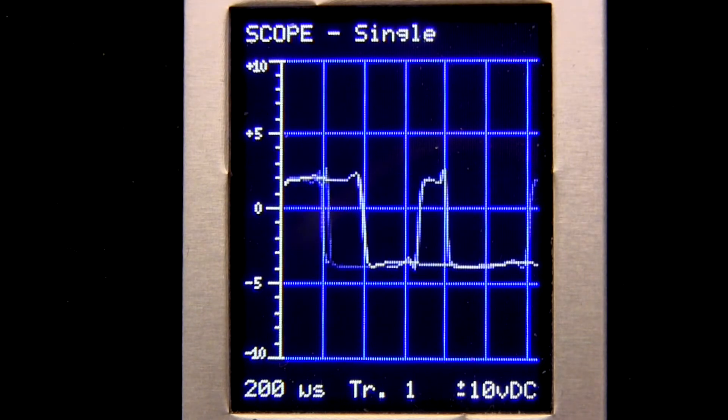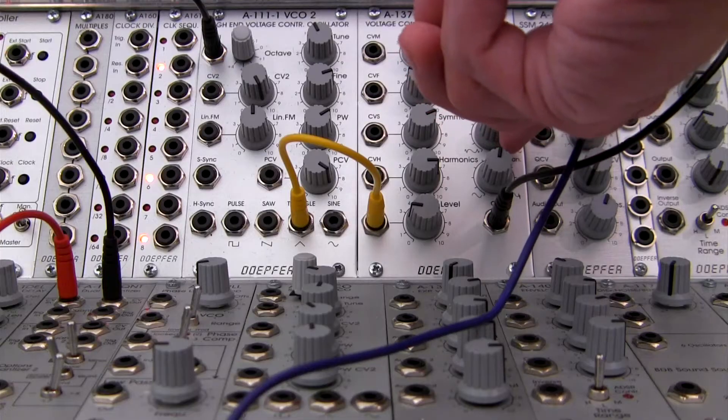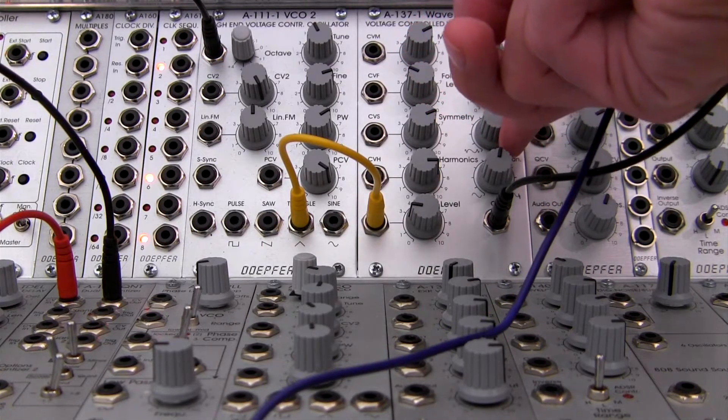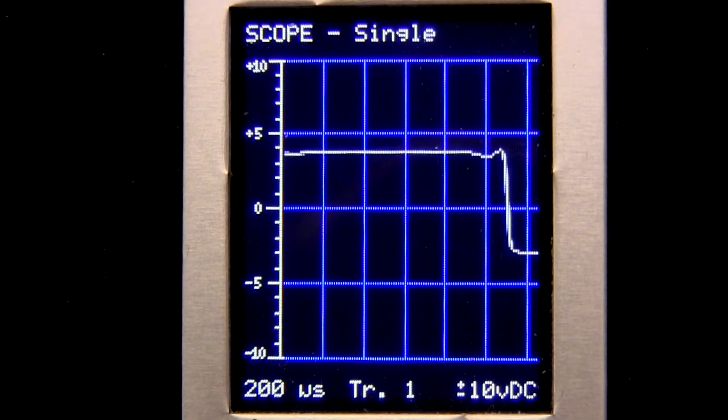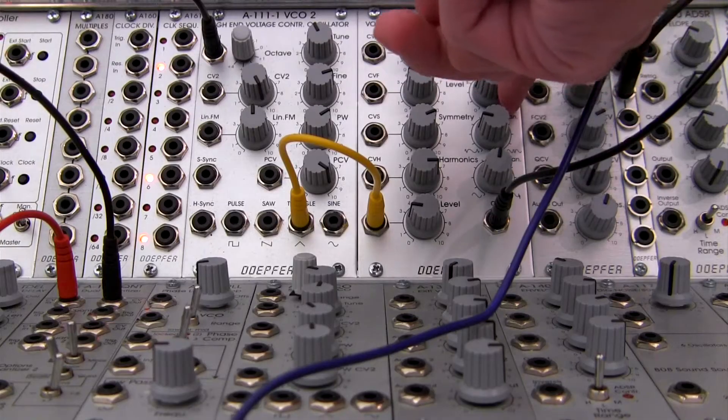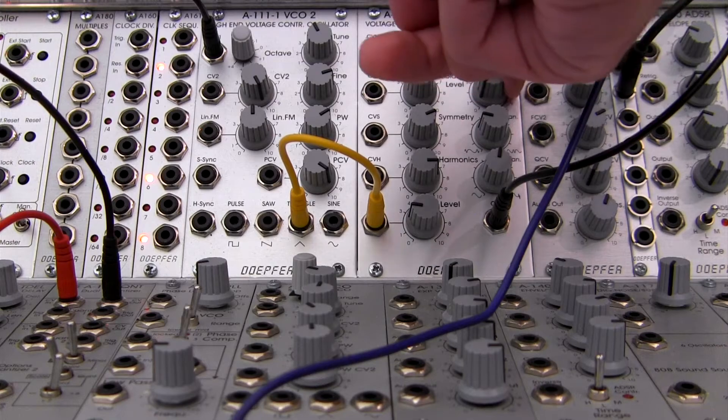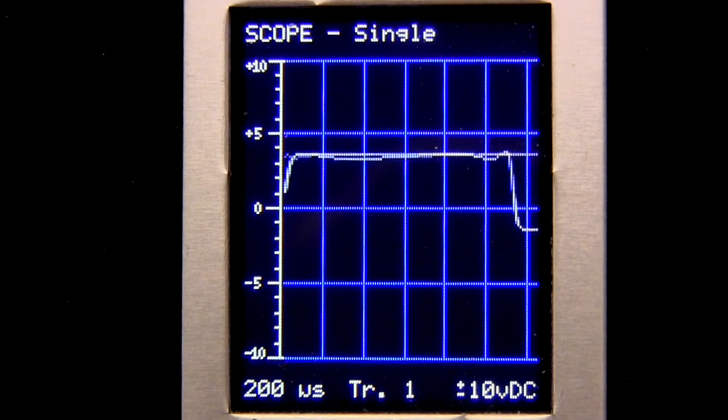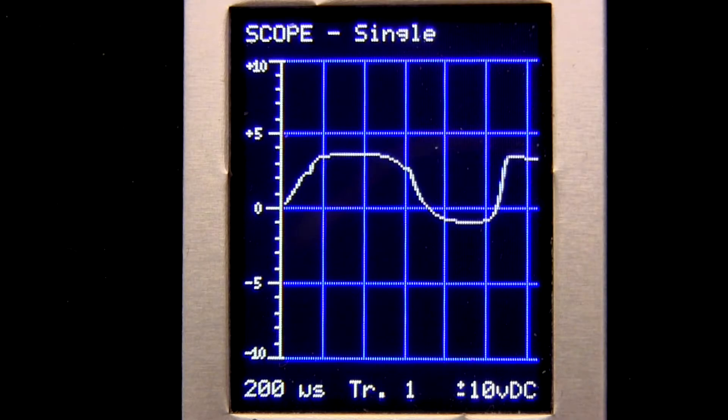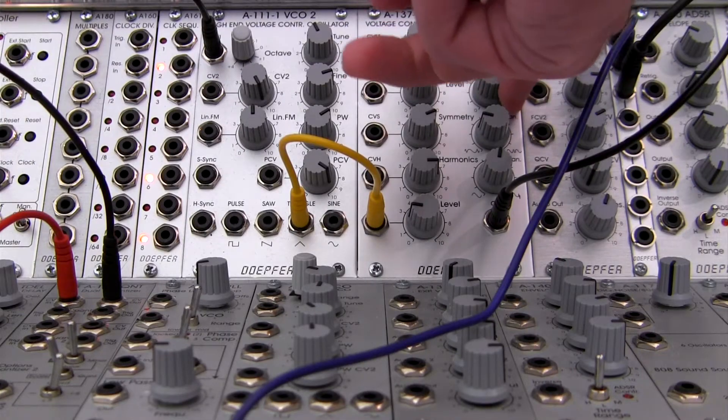I'm going to go back to symmetry and adjust that a little bit. Now moving on to folding level. On our scope you can see we're kind of in that range of pulse waveforms. Now we're kind of leaving that range a little bit.